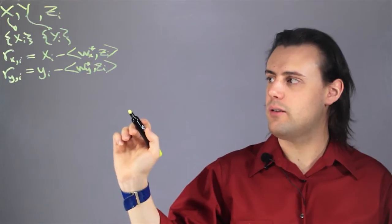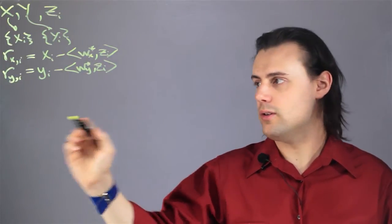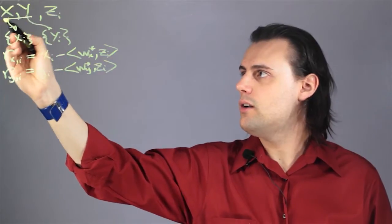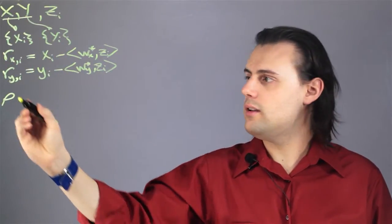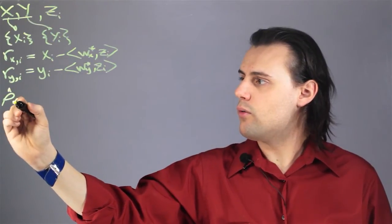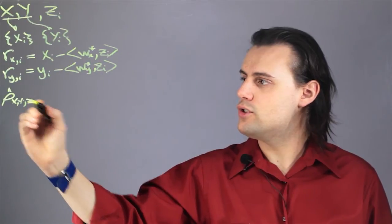we can go ahead and write down and calculate the partial correlation function for these two random variables. It's typically denoted in terms of rho sub xy with the distribution z.